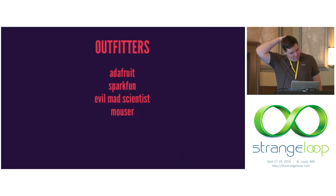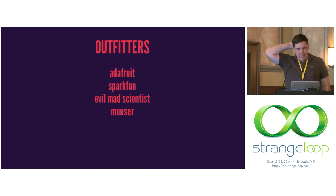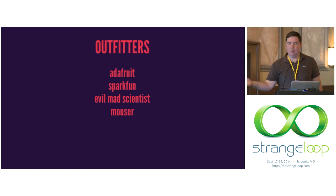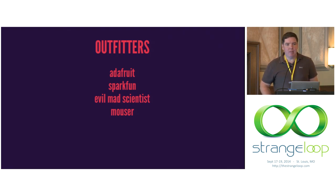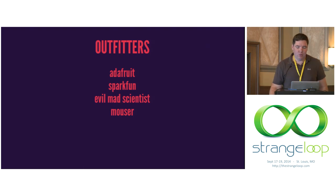So where do you get this stuff? You can get some stuff from Radio Shack, but they don't have a ton of great stuff. Adafruit is really awesome — they have a bunch of project kits and parts. You can get those meters from there, and the receipt printer too. The really cool thing about them is everything they sell comes with example code, tutorials, and Arduino libraries. So it's really awesome.